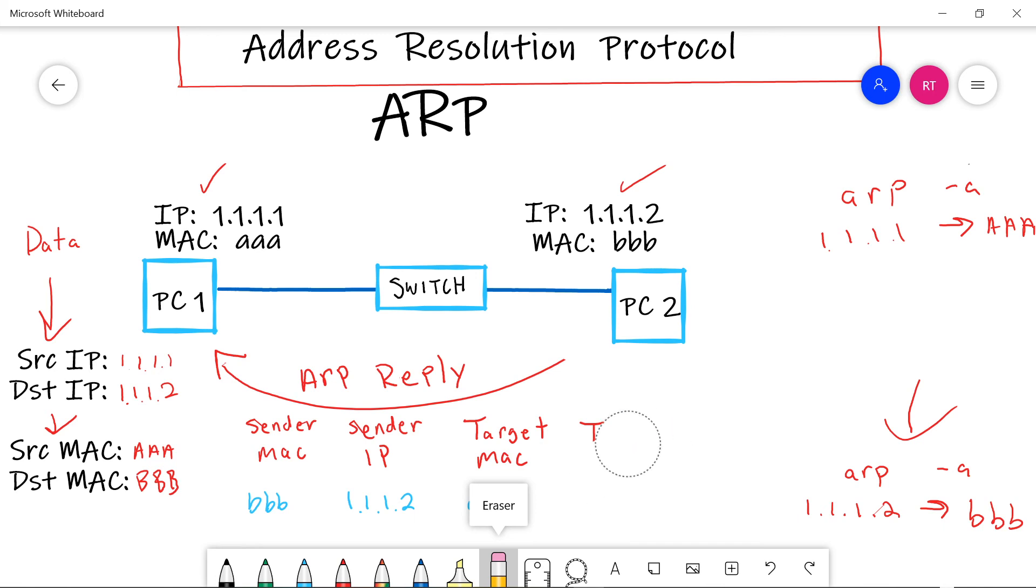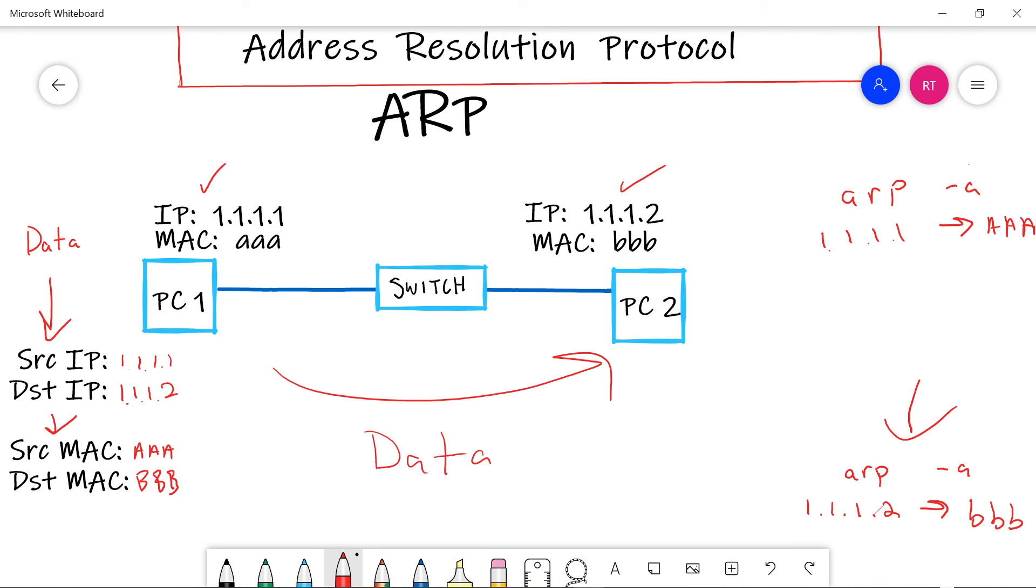All right. So now that everyone knows each other's MAC address, we can finish sending the data without any issues. Remember, we needed this because we take that data, we take that IP header, and we encapsulate them inside of ethernet frames, and ethernet frames use source and destination MAC addresses.